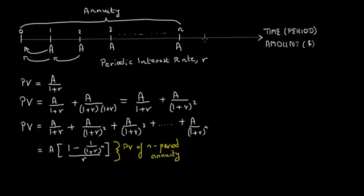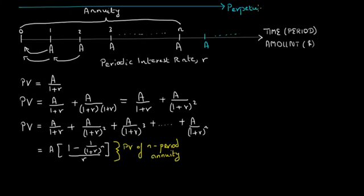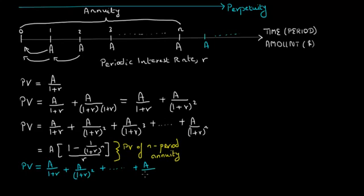Now what if you receive these periodic payments indefinitely? This stream of fixed cash flows received indefinitely is called a perpetuity. The present value of a perpetuity equals the first cash flow discounted at rate R, plus A divided by (1 plus R) squared, and so on including the Nth cash flow discounted over N periods, continuing forever — which simplifies to A divided by R. This is how we calculate the present value of a perpetuity.